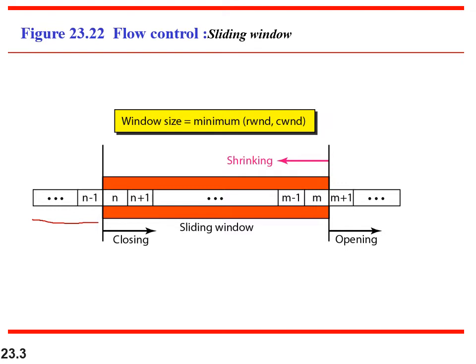The sender window size is determined dynamically. There are two windows: the receiver window, advertised by the receiver indicating its maximum buffer capacity, and the congestion window, indicating maximum capacity to send without packet loss due to congestion. The sender's window size is set to the minimum of the receiver window and the congestion window.